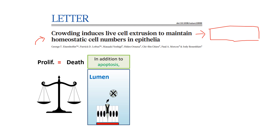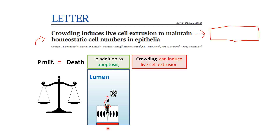What they found — which is what we discussed in previous classes — is that you activate caspases, and when you activate caspases the cells are removed from the epithelium. Actin and myosin form a ring and the cells end up dying. In invertebrates and fruit flies, the cells go up — back into the lumen in these schematics. This is what was previously reported. What they found in this paper is that crowding can induce cells to die.